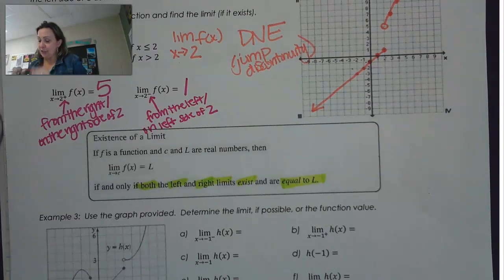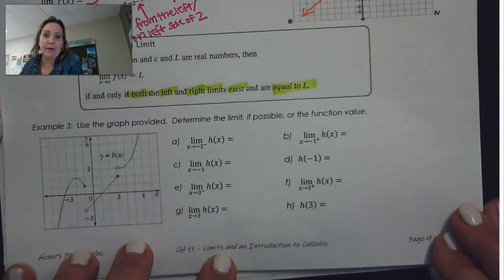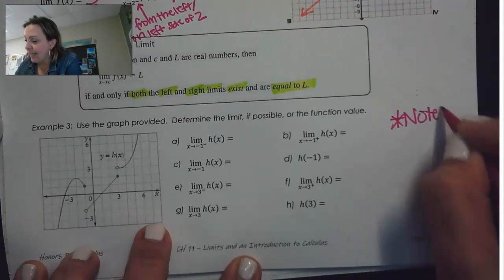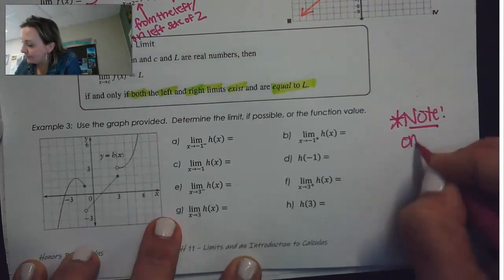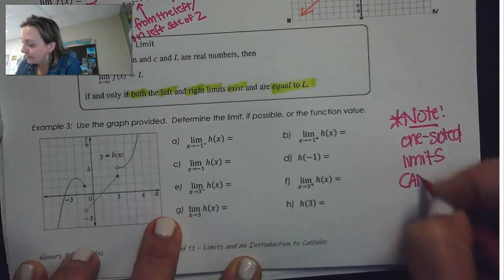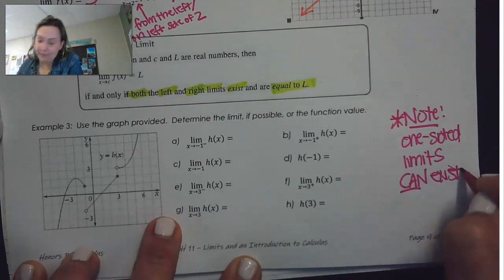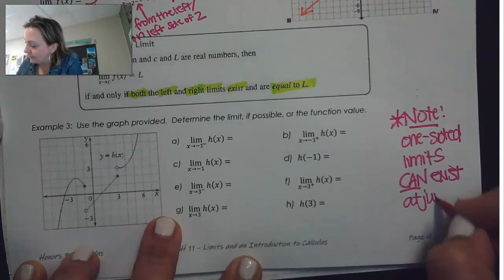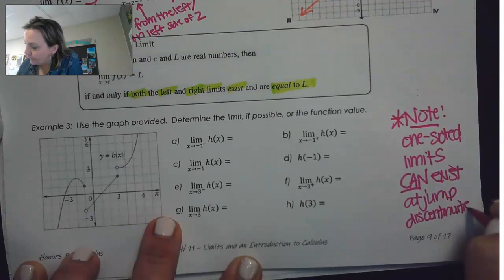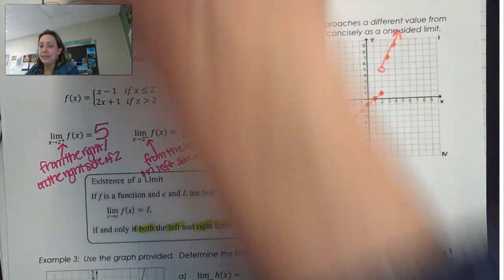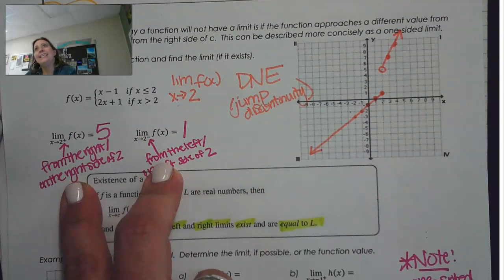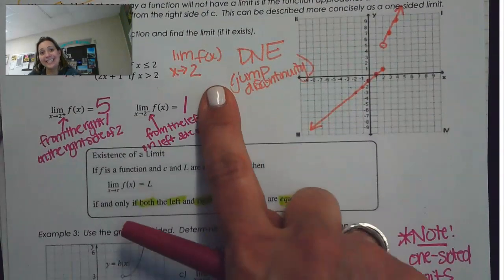One-sided limits can exist at jump discontinuities. In example two, one-sided limits existed at the jump discontinuity, but because there were different one-sided limits, that's why the limit just at 2 didn't exist.